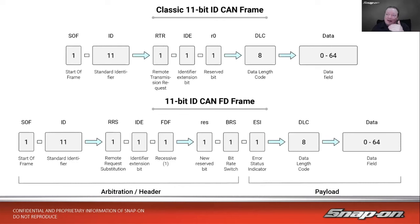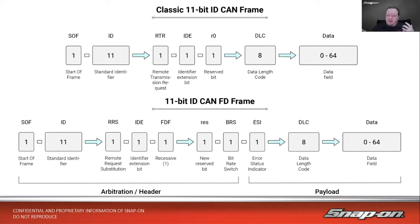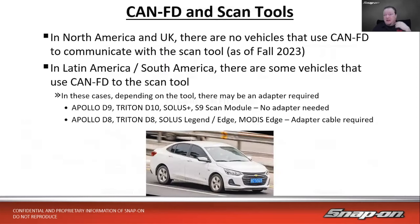Looking at a CAN FD data frame compared to standard CAN: the start, end, and much of the structure are the same — the key change is in the middle where the bit rate can change, allowing for more data and better error correction. On a scope, CAN FD looks very similar to regular CAN — it might be a slightly longer frame or slightly higher frequency, but you don't need to change much when working on those vehicles.